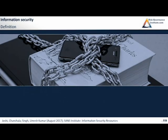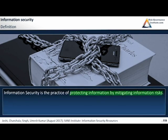Let's start by understanding the definition of information security. Information security is the practice of protecting information by mitigating information risks. That's the shortest definition I could find - the practice of protecting information by mitigating the different risks to that information.